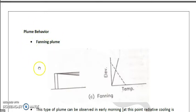How they behave in the environment when environment is stable, unstable, or neutral, or conditionally stable. So basically we observe some five kind of plume behaviors.